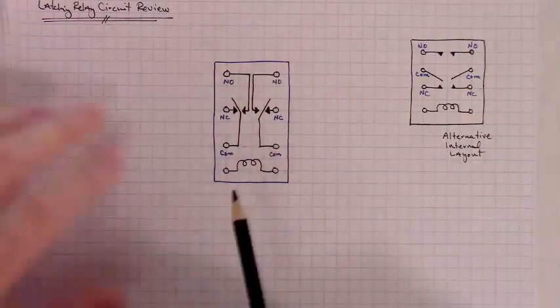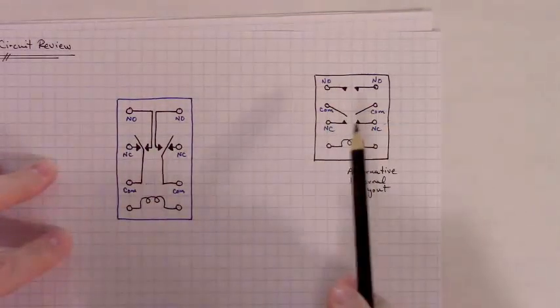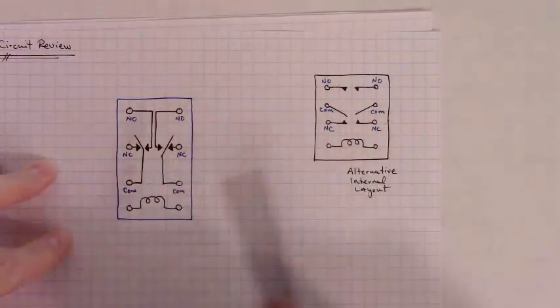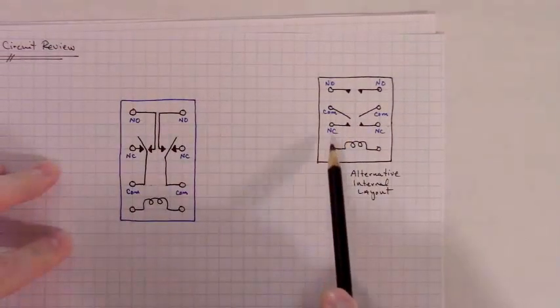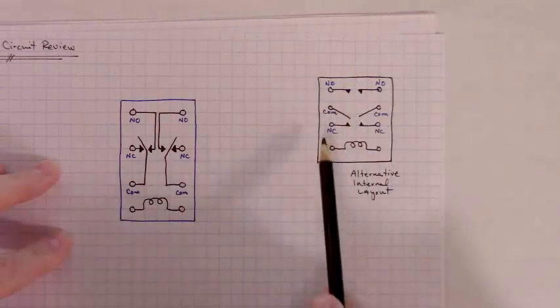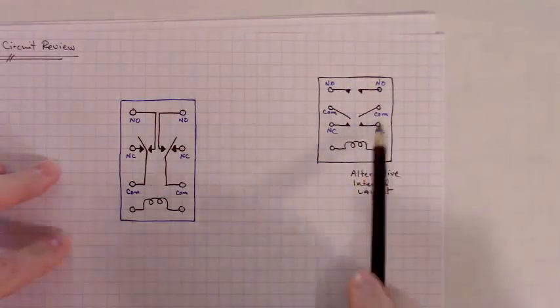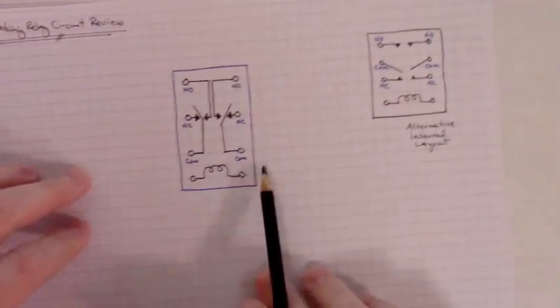In my previous video on how to build a selectable latching relay circuit, I used a double pole double throw relay that has an internal layout like this. Either sort of relay will work for this circuit. You just have to pay attention to which pins are associated with the common poles, the normally open contacts and the normally closed contacts.